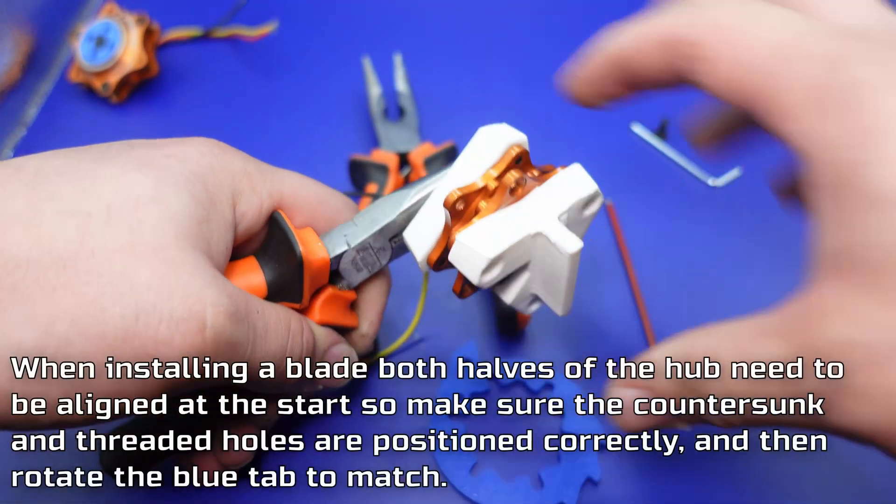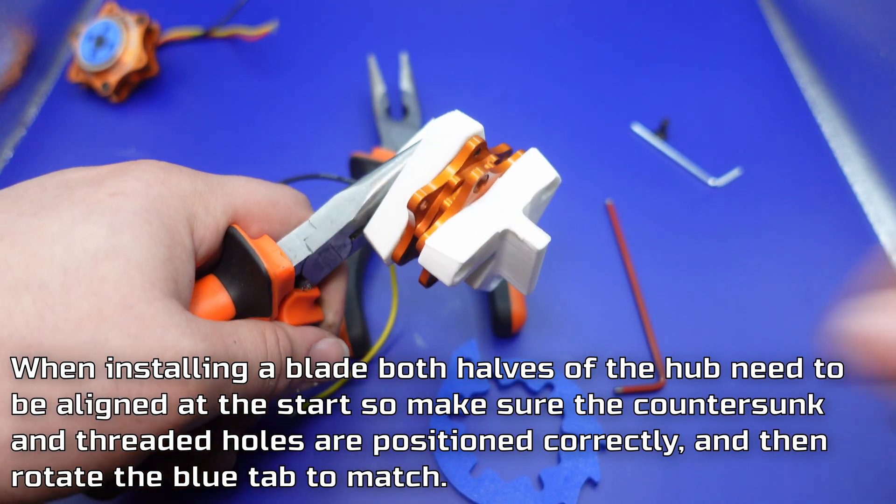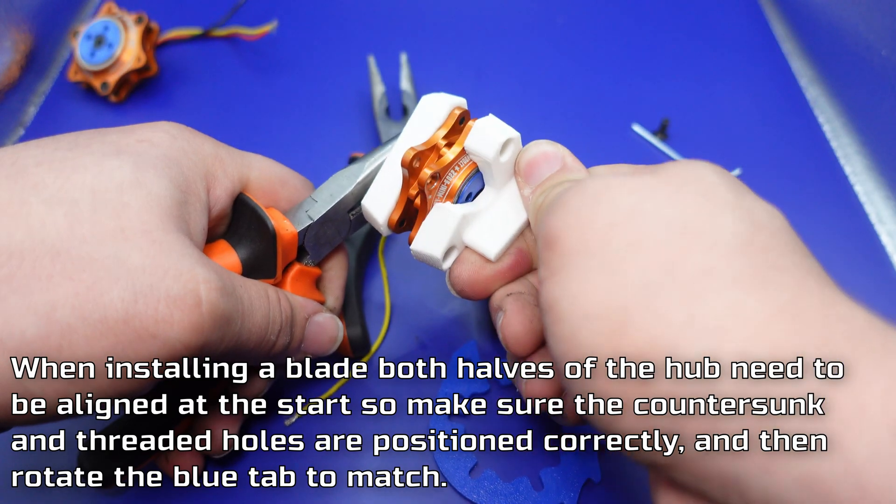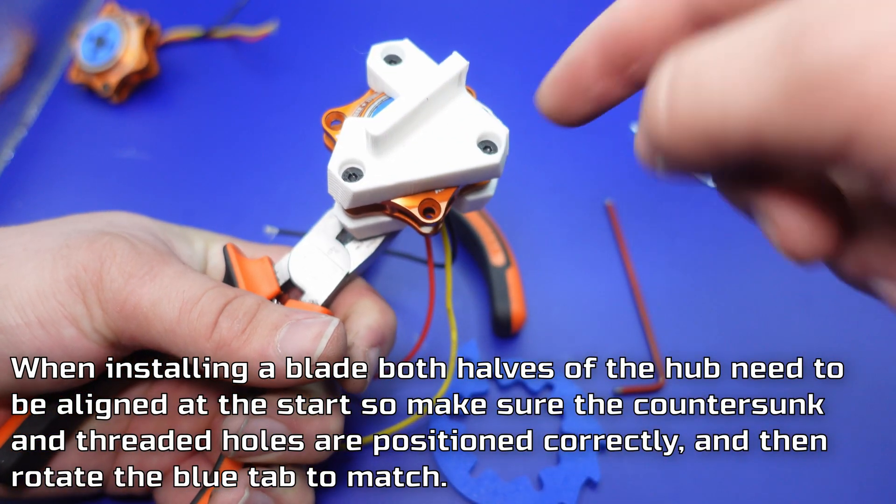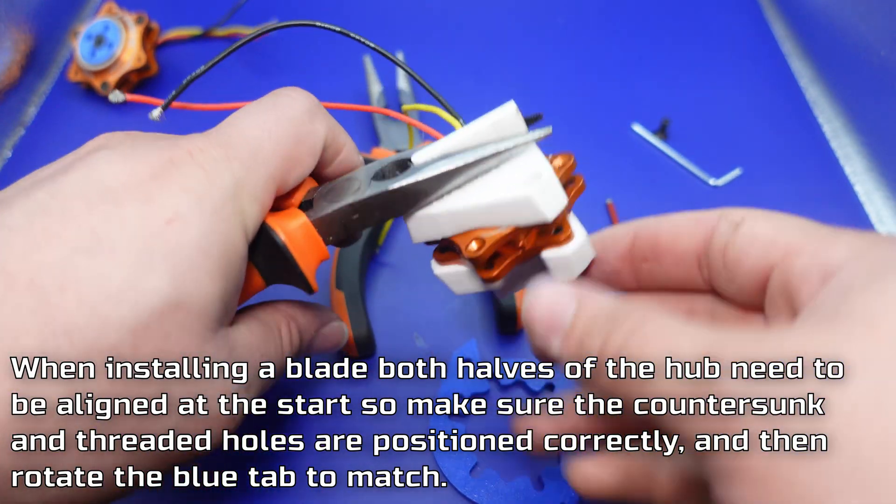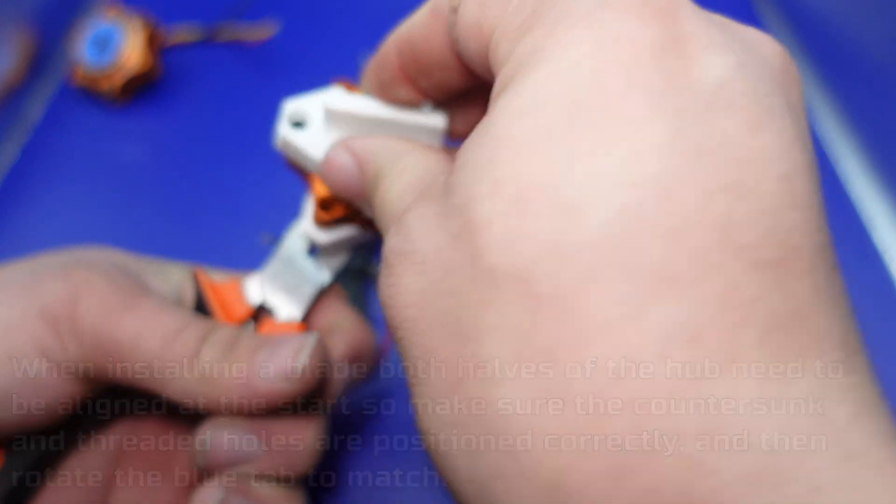Once you get those blue parts together you should be able to push it in enough that that gap is gone but you can see now we still are able to rotate this. So again you want to just line up any of the countersunk holes with the threaded ones on this side. Not countersunk to countersunk. Has to be countersunk to threaded.